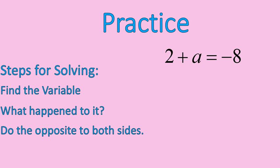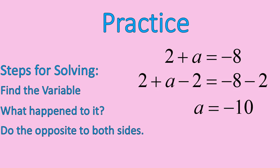Hello, welcome back. I'm going to follow these steps. I find my variable, a is my variable. I ask myself, what happened to my variable? Well, I added 2 to my variable, 2 plus a. So I'm going to subtract 2 from both sides of this equation. 2 plus a minus 2. The 2 and minus 2 will cancel each other out, leaving me with a by itself on the left side of the equation. I have negative 8 minus 2, which will give me negative 10. So in all of these, we have to remember the steps for adding and subtracting integers. And then you should be good to go.